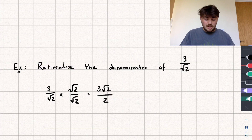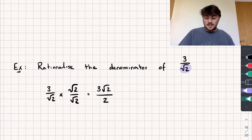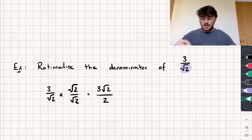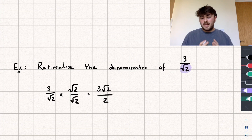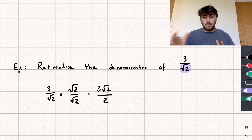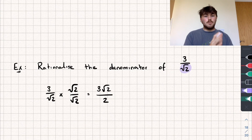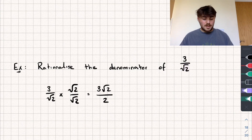The reason it's called rationalising is that a surd on the denominator is what we call an irrational number — it can't be expressed as a fraction with integer numerator and denominator, and as a decimal it goes on forever and never ends or repeats. So root 2, expressed as a decimal, would just go on forever and never end.